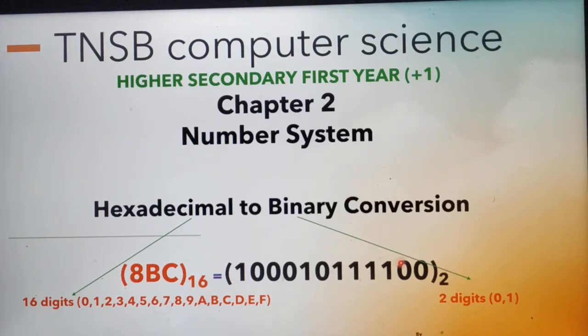Next, binary — 'bi' means 2. Here we have the combination of 2 digits, 0 and 1. So its base is given as 2.